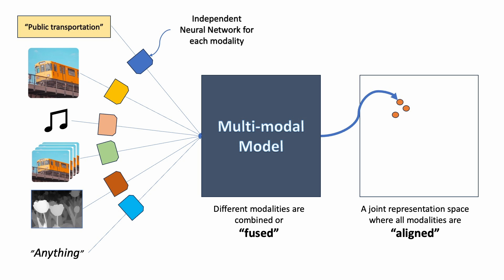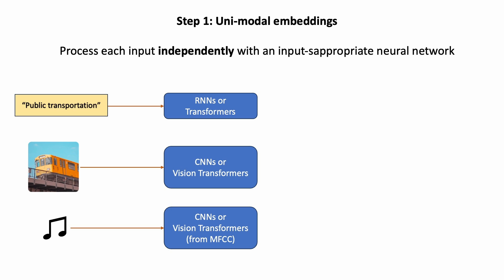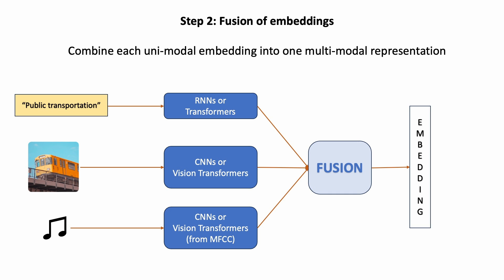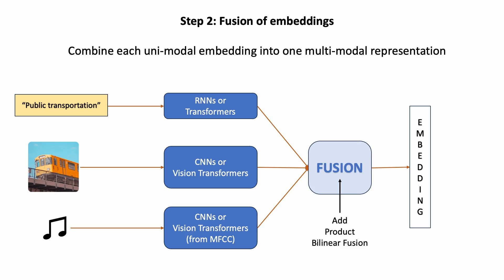A common first step is to independently embed each of the input modalities through their own appropriate neural network to form unimodal embeddings. This means we can choose to use an RNN or a transformer to embed a sentence as a sequence of tokens, and a CNN or a vision transformer to embed an image or the mel spectrogram of an input audio sample. Following this, we have a fusion step that fuses these unimodal embeddings into a new joint representation space that allows for cross-modal interactions. These fusions could be additive, multiplicative, a concatenation, an outer product, or most commonly, another neural network.